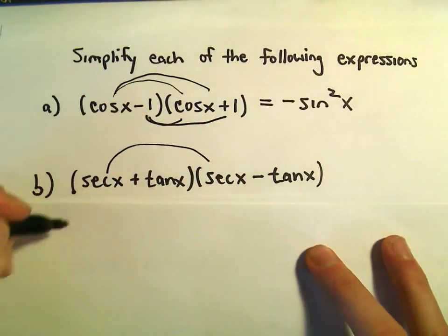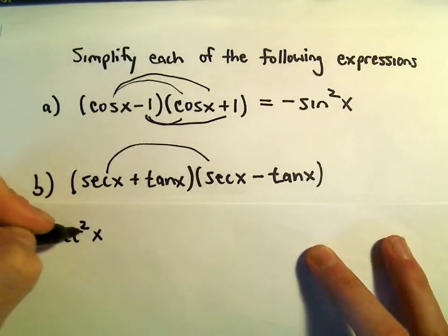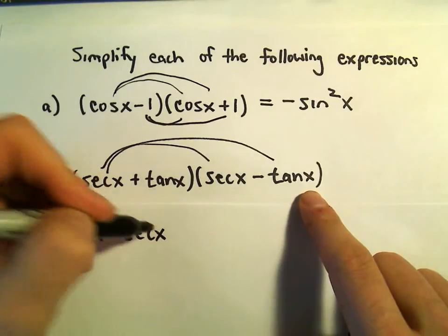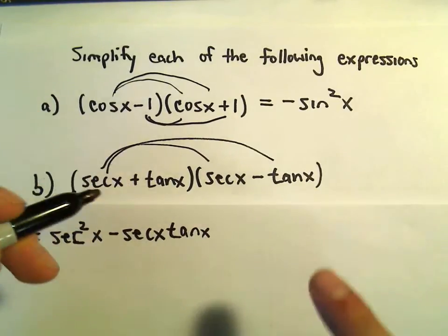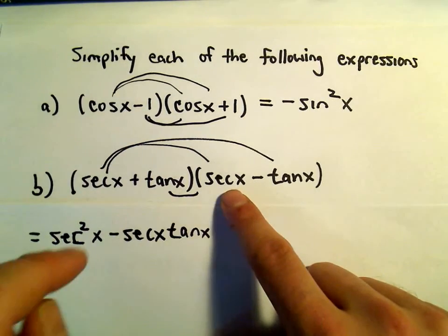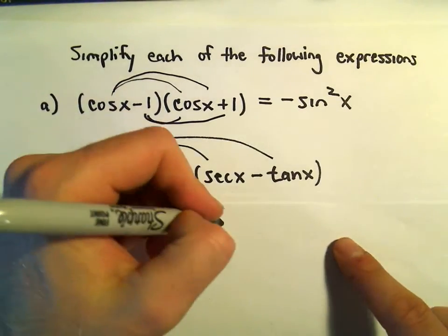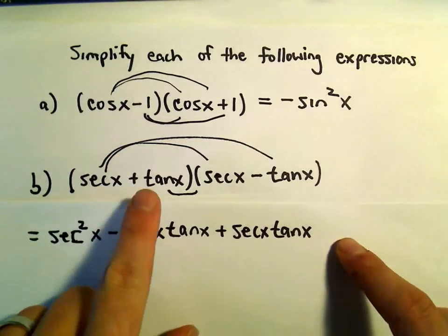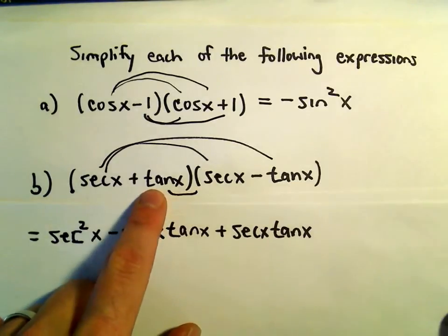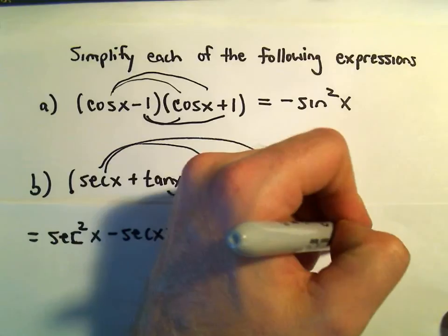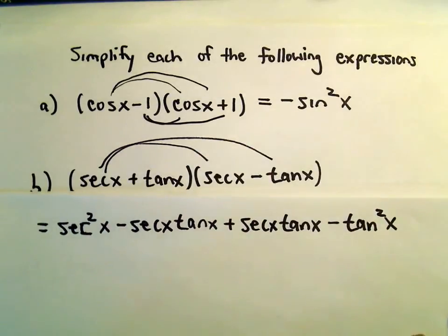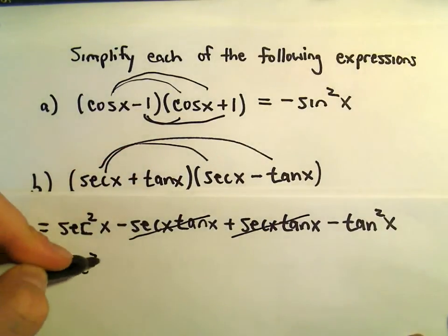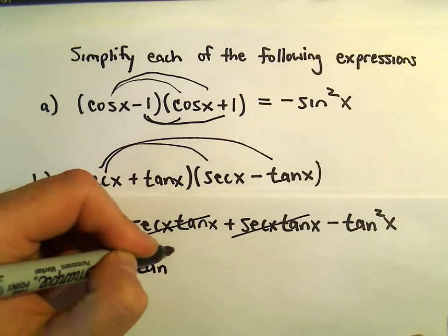We have secant times secant, which is secant squared x. Secant times negative tangent is negative secant x times tangent x. On the inside, we have positive tangent times secant. Since it's multiplication, I can order it however I want, so secant x times tangent x. Then positive tangent x times negative tangent x gives us negative tangent squared x. The negative secant tangent and positive secant tangent cancel. We're left with secant squared x minus tangent squared x.